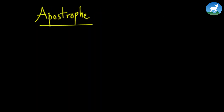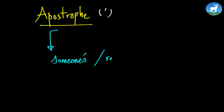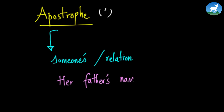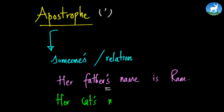Now, apostrophe. An apostrophe is used to show a relationship or possession. For example, 'Her father's name is Ram' — the apostrophe shows the relationship between her and her father. Another example: 'Her cat's name is Keo.' So apostrophes indicate that something belongs to someone.